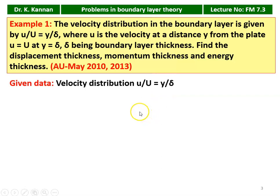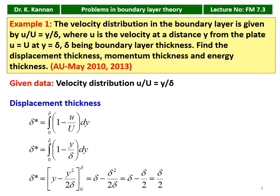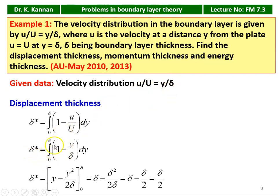The value given is the velocity distribution u/U = y/δ. First, we calculate the displacement thickness. Displacement thickness δ* is defined as the integral from 0 to δ of (1 − u/U) dy. Substituting u/U = y/δ, δ* equals the integral from 0 to δ of (1 − y/δ) dy.